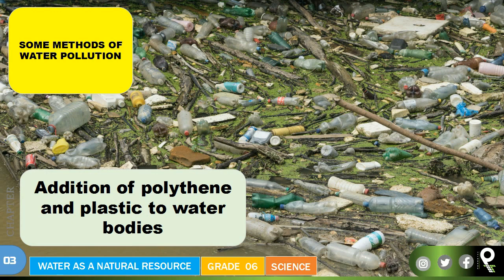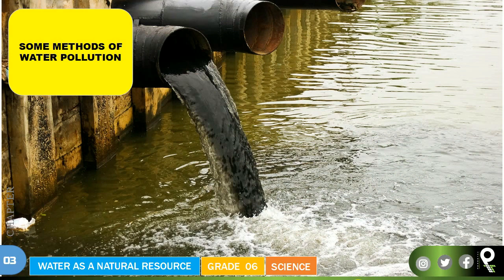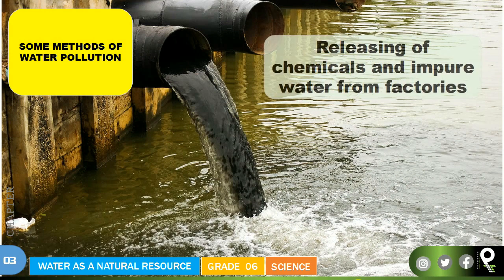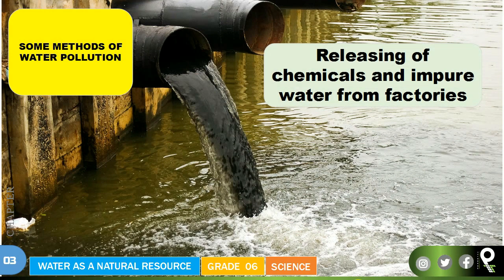The next cause is the addition of polythene and plastic to water bodies. Most people don't take care of it — look at how much polythene waste is visible in this picture. People are throwing polythene and plastic into water bodies, which is also causing water pollution.